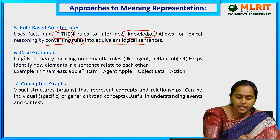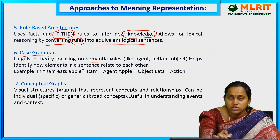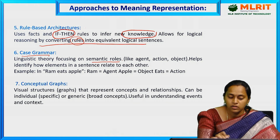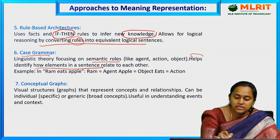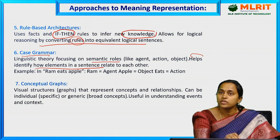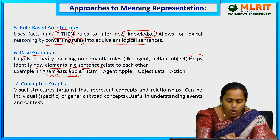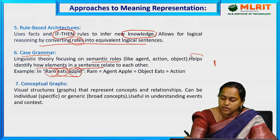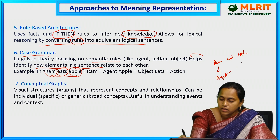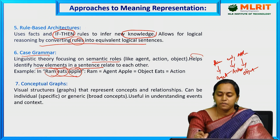Case grammar is a linguistic theory that focuses on semantic roles such as agent, action, object, and subject. These come under lexical semantics and help identify how elements in a sentence relate to each other. For example, 'Ram eats apple' — here Ram is the agent, apple is the object, and eat is the action.